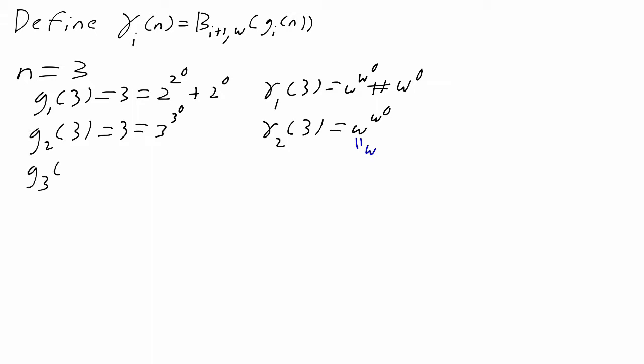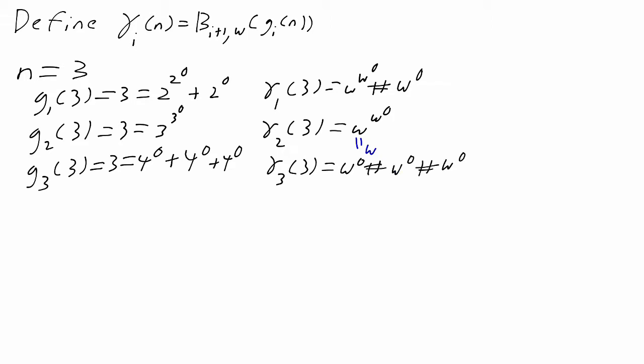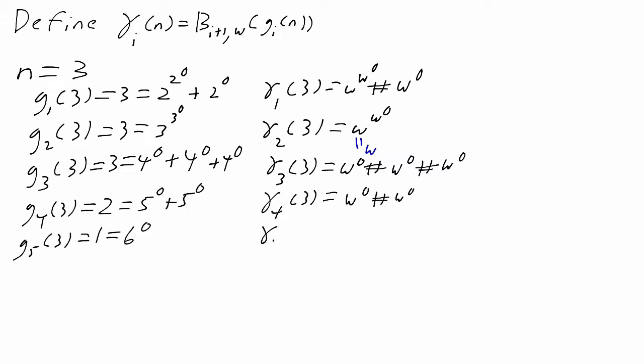Next, g_3(3) is 4 - 1, which is 3 again, or if you prefer, 4^0 + 4^0 + 4^0. So gamma_3(3) is omega^0 + omega^0 + omega^0. And from there, both sequences just decrease by 1 at each step.